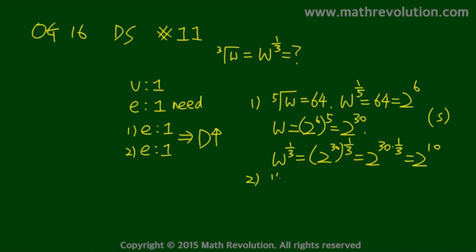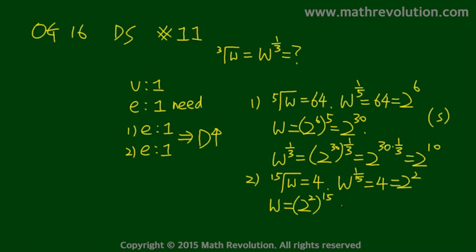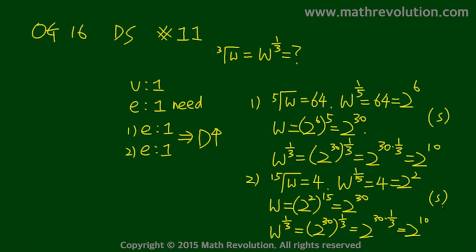Looking at condition 2, we have the 15th root of W equals 4. So W to the power of 1 over 15 equals 4, which is 2 squared. Then W becomes 2 to the power of 2 raised to the power of 15, which is 2 to the power of 30. As seen from condition 1, W to the power of 1 over 3 equals 2 to the power of 30 times 1 over 3, which is 2 to the power of 10. The answer is unique and the condition is sufficient, so the correct answer choice is D.